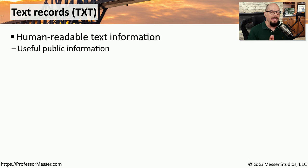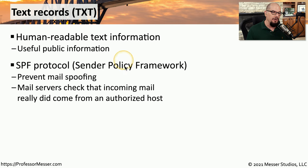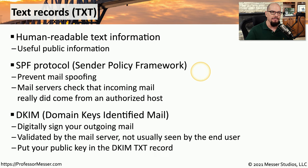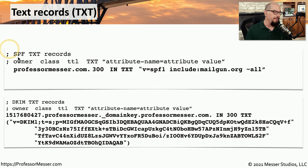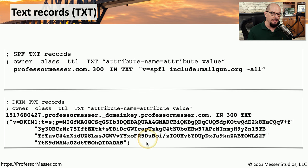There may be times when we're not adding a DNS name or IP address, but instead putting text into our DNS server. This text may be something like an SPF record — Sender Policy Framework — which prevents someone from spoofing email from our domain. SPF records allow mail servers to verify that email really did come from our domain. Another type of text record is DKIM, Domain Keys Identified Mail, which allows us to digitally sign outgoing mail. We put the public key in the DKIM record so it can be verified by the receiver.